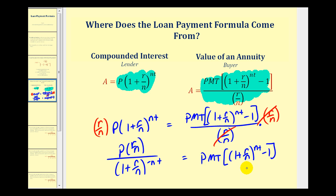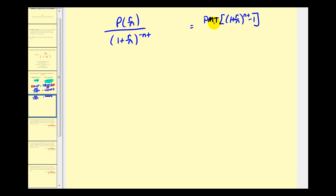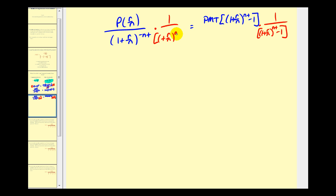Let's continue on the next page. Now to isolate PMT, we're going to divide — or multiply — by one over the quantity one plus R over N to the NT power minus one. Looking at the right side, this simplifies out and we're left with the payment. So we've isolated PMT.